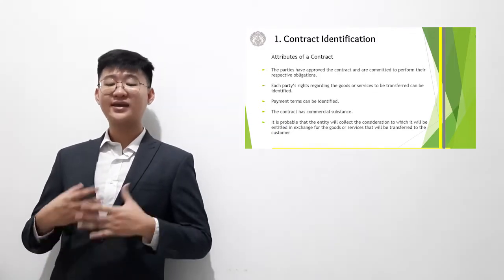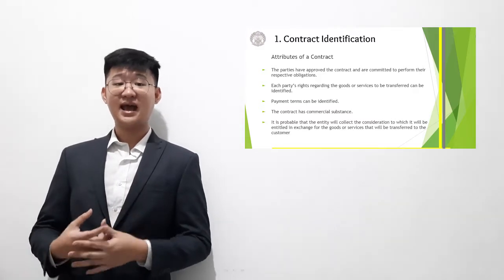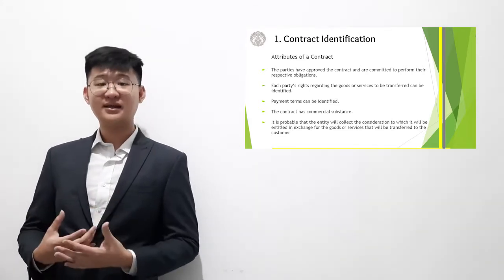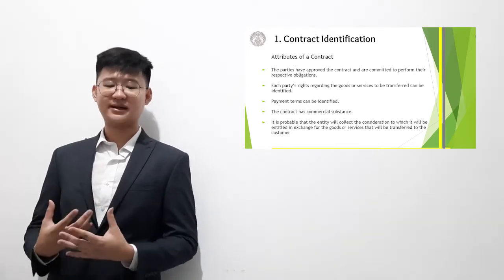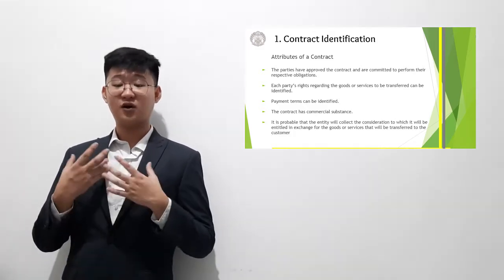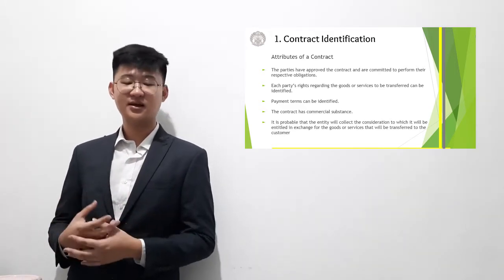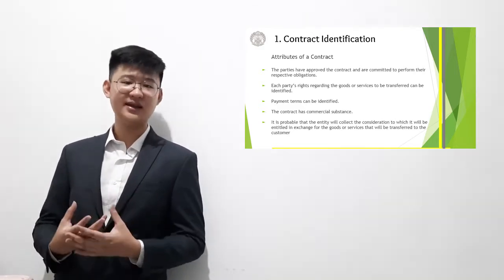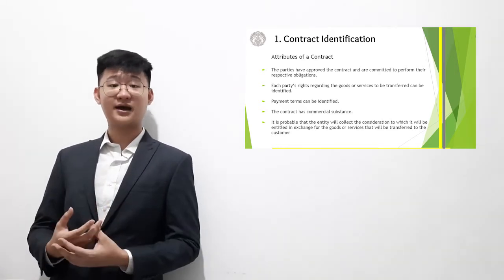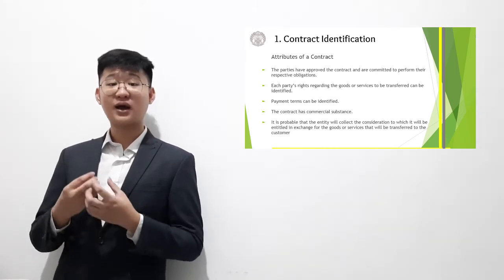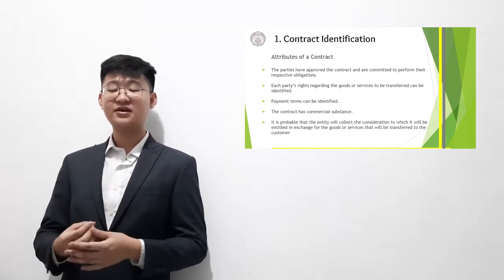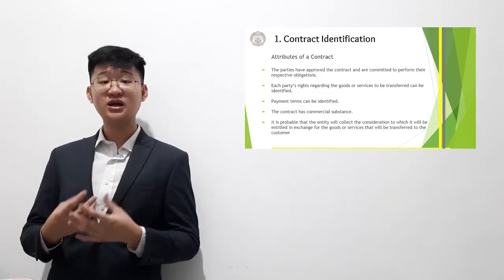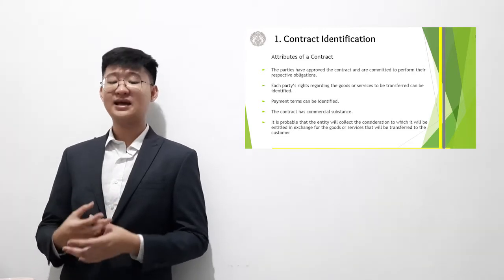A contract creates enforceable rights and obligations between two parties and can be in the form of written, oral, or even implied. According to IFRS 15, a contract has a few attributes. First, the parties have approved the contract and are committed to perform their obligations. Second, each party's rights to the goods or services to be transferred can be identified. Third, the payment terms can also be identified. Fourth, a contract has to have commercial substance, meaning there is a monetary value. And fifth, it is probable that a consideration could be collected once the transfer of goods or services has been done.